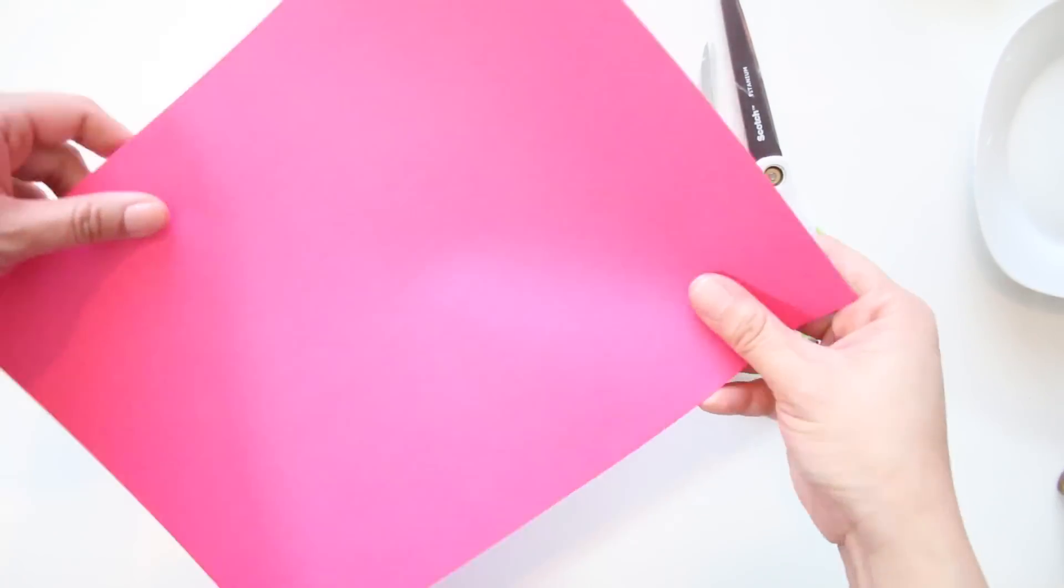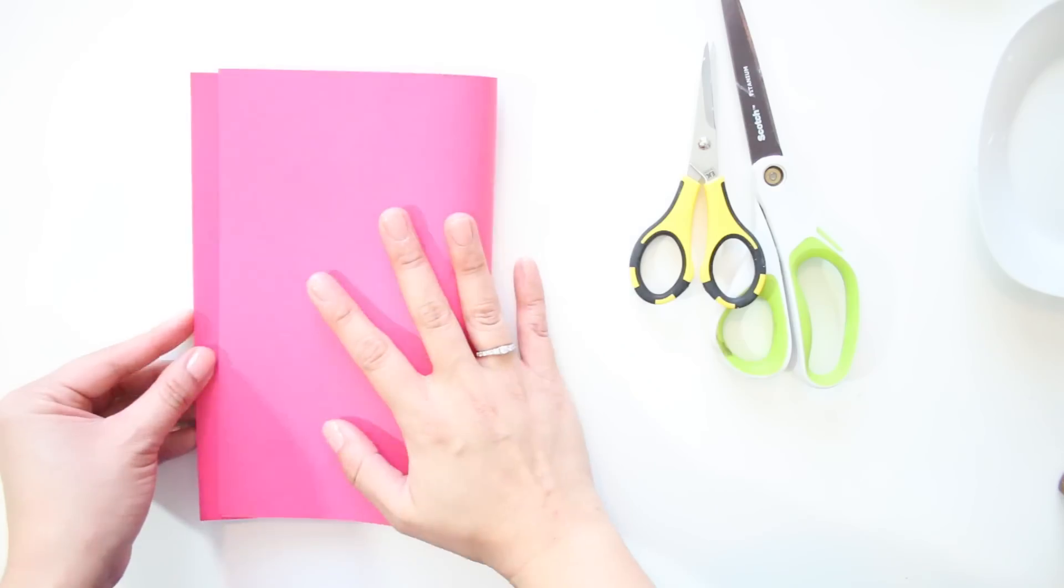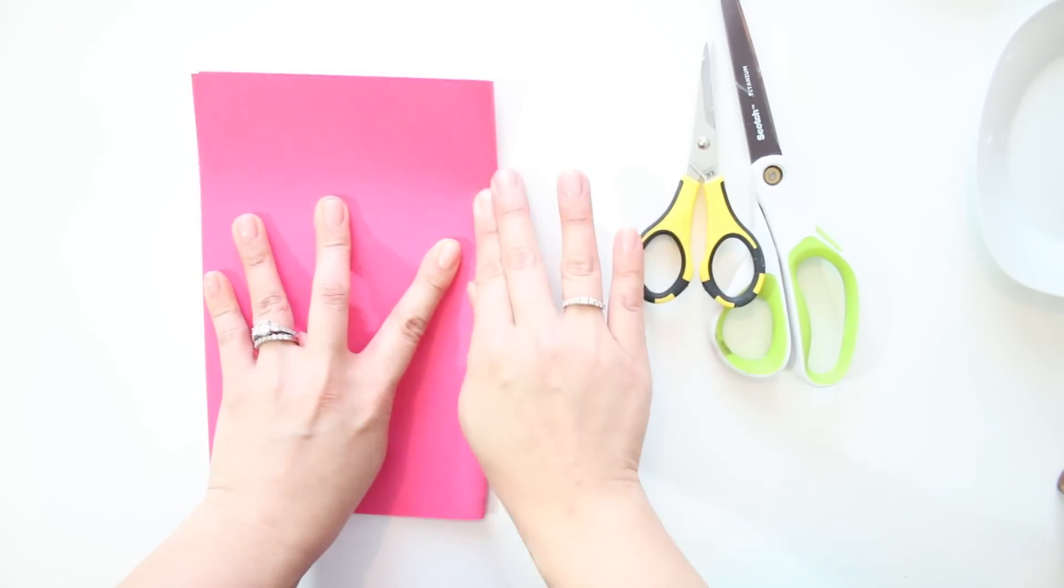First, take your paper, fold it in half, and cut it. Then you should end up with 18 half-sheets.